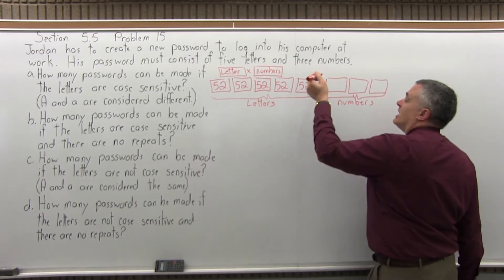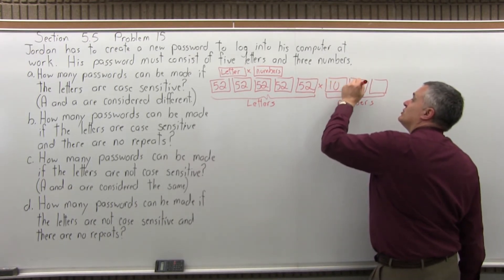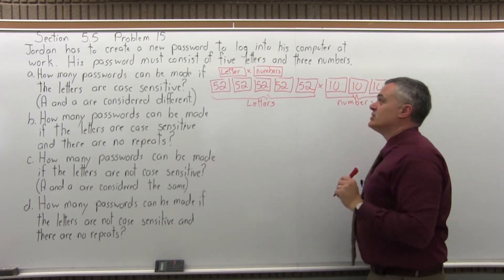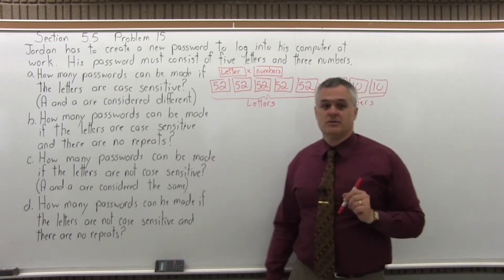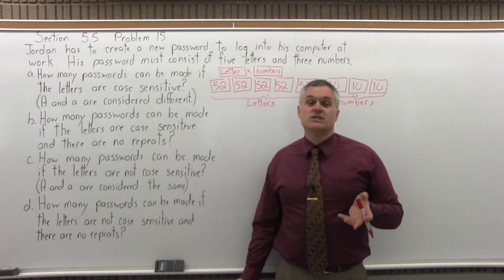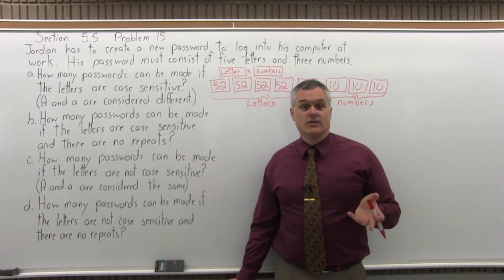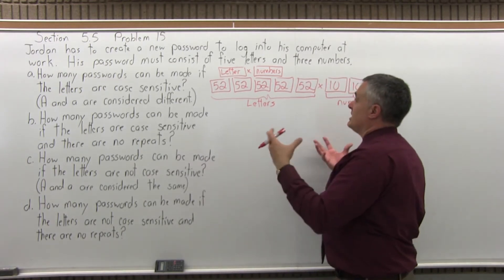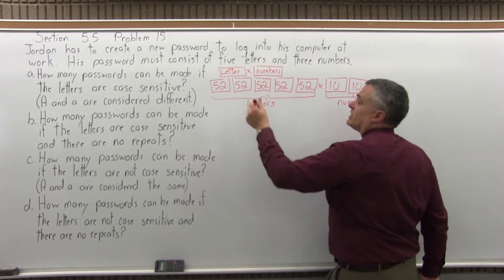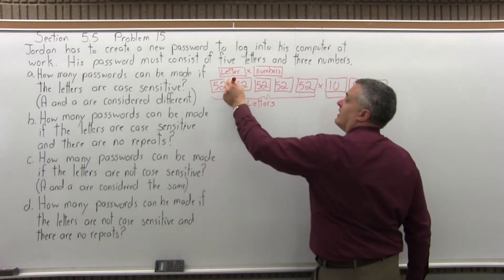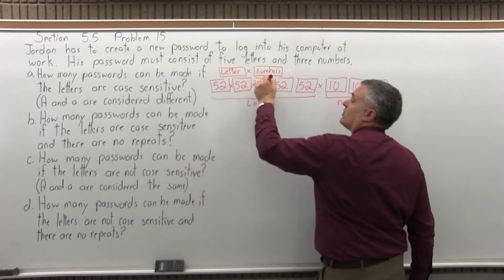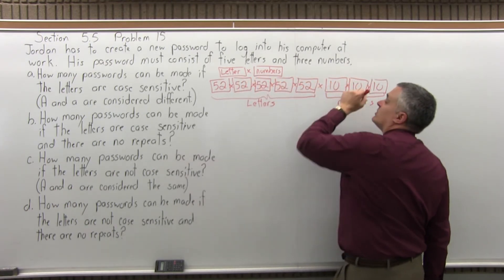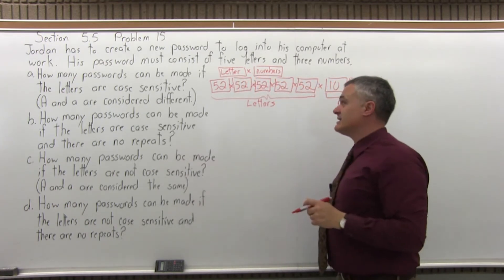Now for the numbers, you have ten choices for each number. Those ten choices are the digits zero through nine. So this is how many different ways we can make a password that consists of five letters and three numbers when the letters are case sensitive.